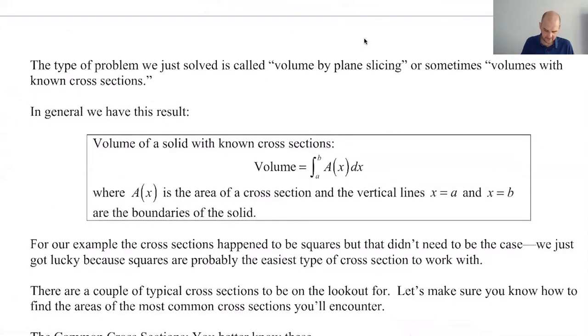So in general, this is the result that we want to know. So if you are told what the cross sections look like and you are asked for volume, all you end up doing is integrating the area of a cross section from where you start to where you stop. The key is to write the area of a cross section in terms of, if you're doing dx, then in terms of x. If you're doing dy, in terms of y.